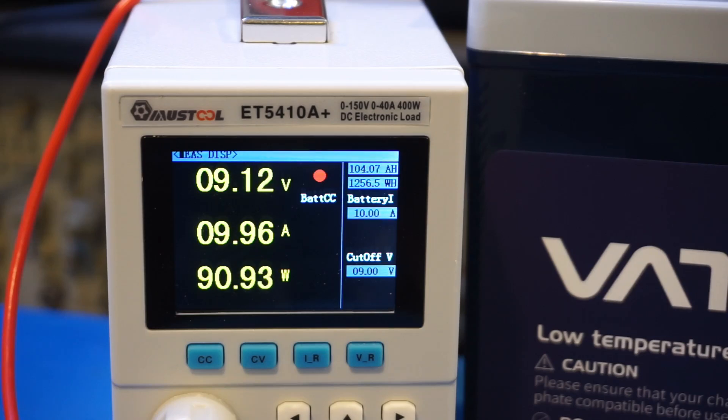I did capture the moment of the cutoff. You can see the battery voltage dropped off very rapidly towards the end. We were able to get over 104 amp hours out of the battery, which is excellent. This is definitely on the higher end of the measured capacities among all the 100 amp hour batteries I have tested.